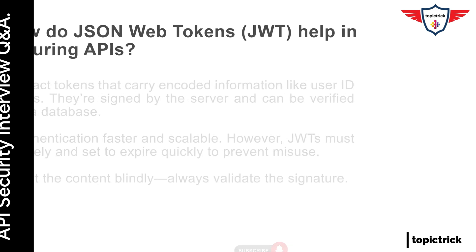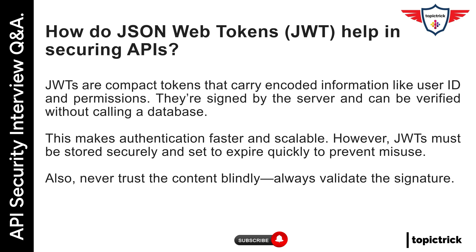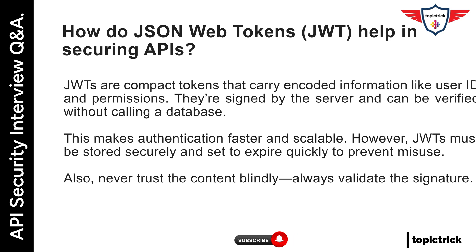How do JSON Web Tokens (JWT) help in securing APIs? JWTs are compact tokens that carry encoded information like user ID and permissions. They're signed by the server and can be verified without calling a database, making authentication faster and scalable. However, JWTs must be stored securely and set to expire quickly to prevent misuse. Also, never trust the content blindly — always validate the signature.